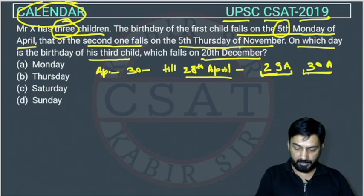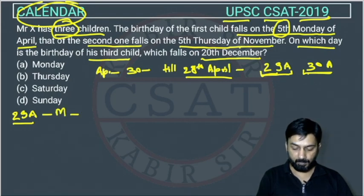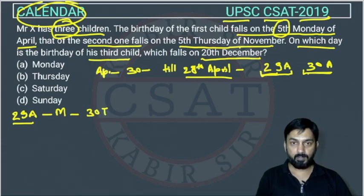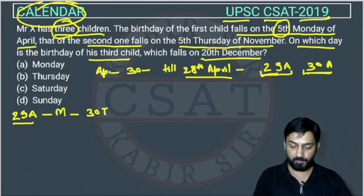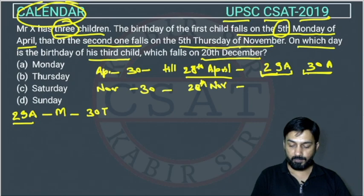Suppose the birthday of the first child is on 29th April and this is a Monday. Then 30th April will be Tuesday. Now we have to count how many days there are till the fifth Thursday of November. In November also there are 30 days, so the same logic applies — till 28th November only four weeks complete, so the fifth Thursday falls on 29th or 30th November.